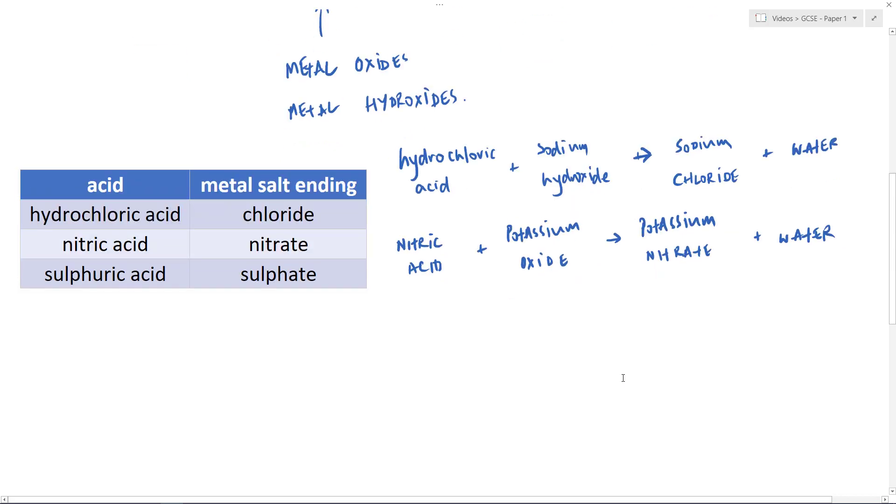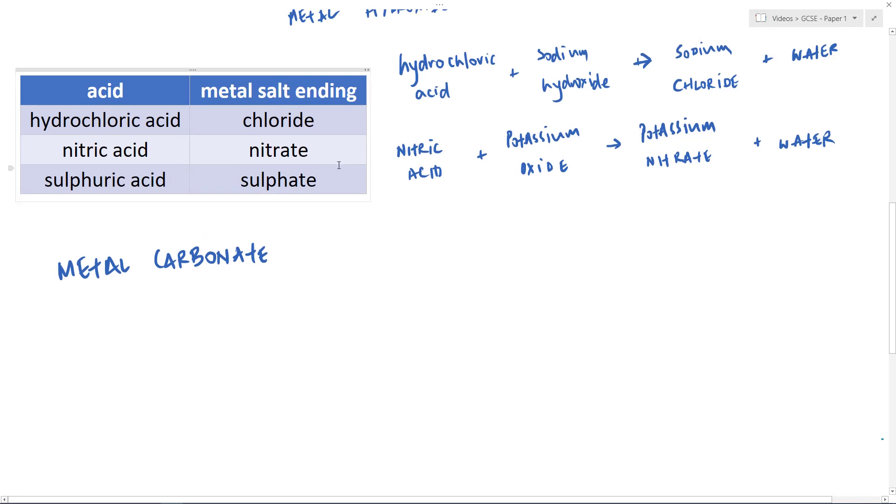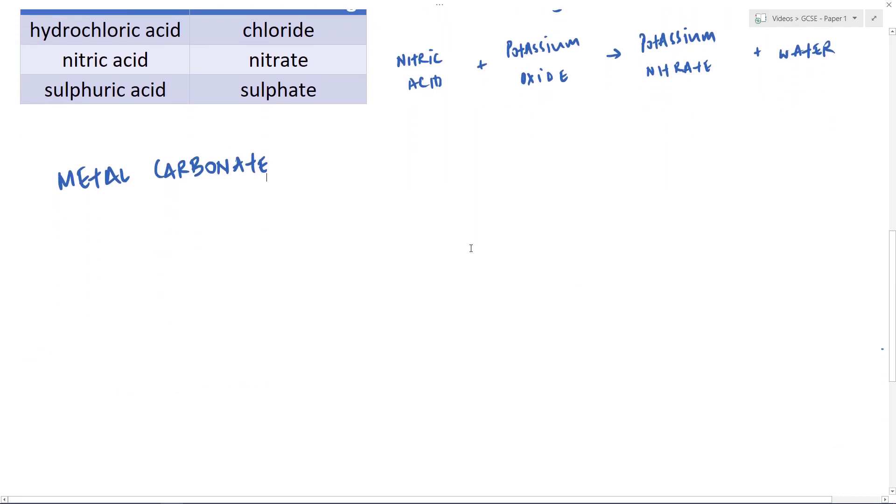Now there is another type of base that can neutralise, and I'll keep that metal salt bit there. There's another type of base that can also neutralise acids and those are metal carbonates. Now metal carbonates, as I say, neutralise acids, but their reaction is not the same as here and that's why I specified here. Metal oxides and metal hydroxides react like this, metal carbonates don't.